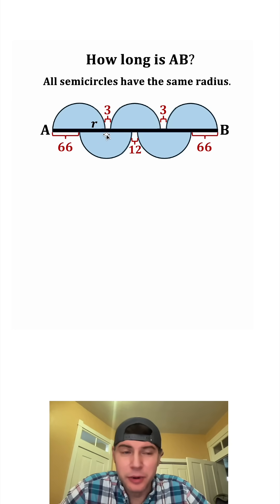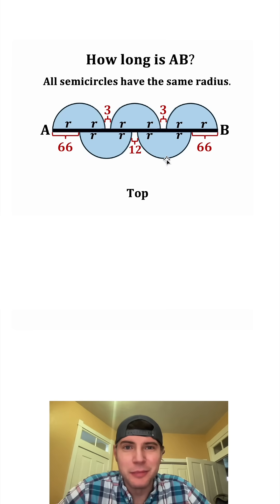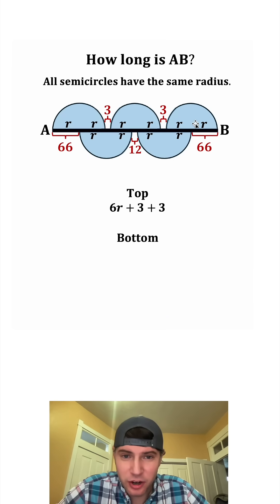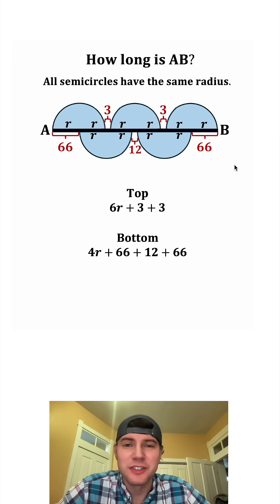So first let's identify a radius. And since we're given that they all have the same radius, all of these are going to be the same. And then let's look at the top and the bottom. The top is 6R plus 3 plus 3. And the bottom has 4R plus 66 plus 12 plus 66.